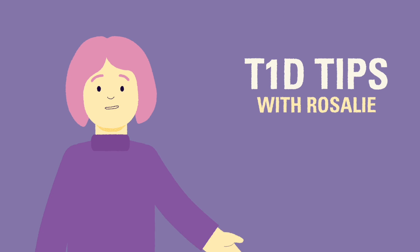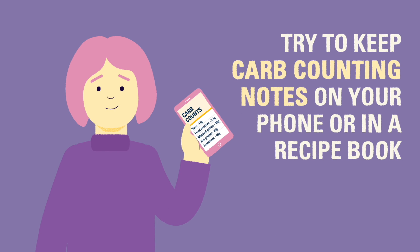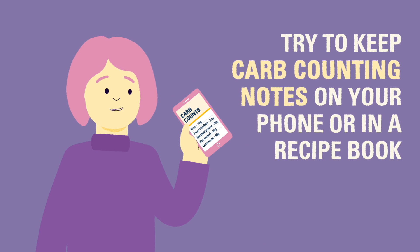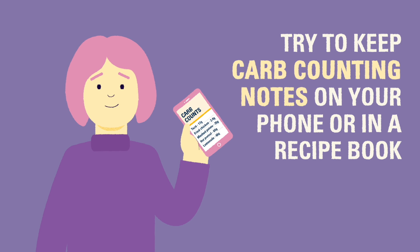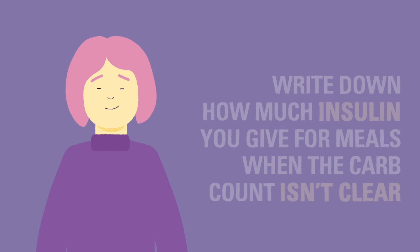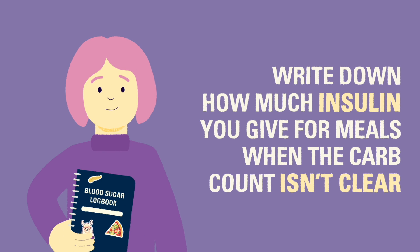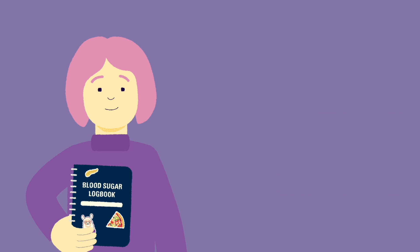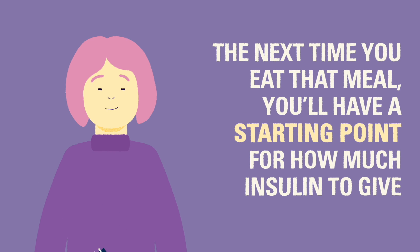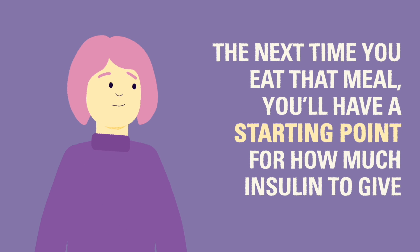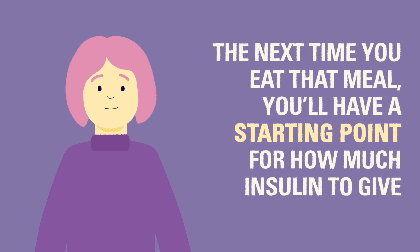T1D tip: We recommend keeping a small notebook or a note on a smartphone with some go-to recipes and favorite foods to take some of the confusing math out of enjoying meals and snacks. It's also a good idea to write down the amount of insulin given for recipes when the carb count isn't clear, so you can refer back to that amount the next time you eat that food. If the amount of insulin needs to be changed based on the last time, you'll have a great starting point.